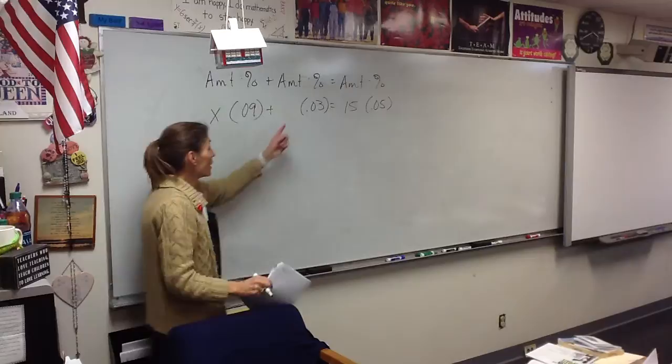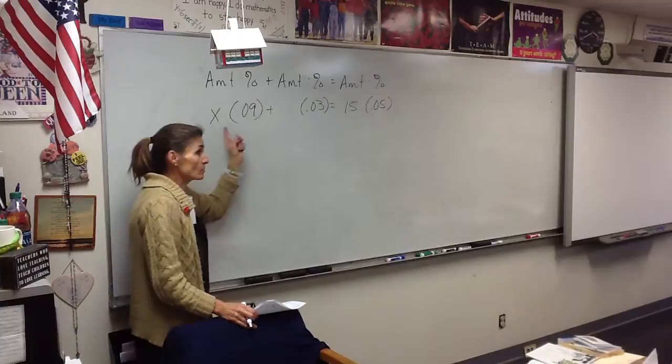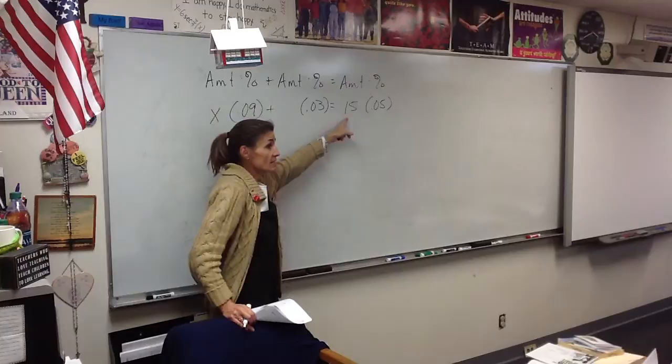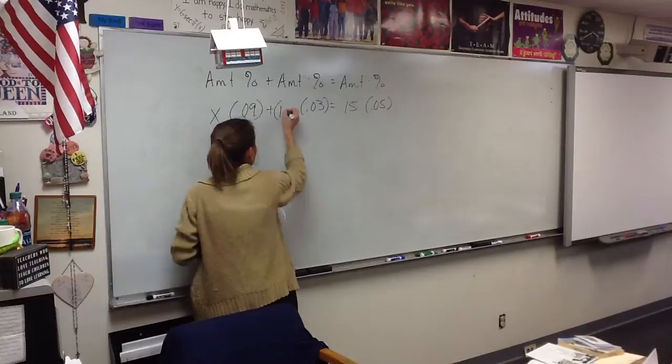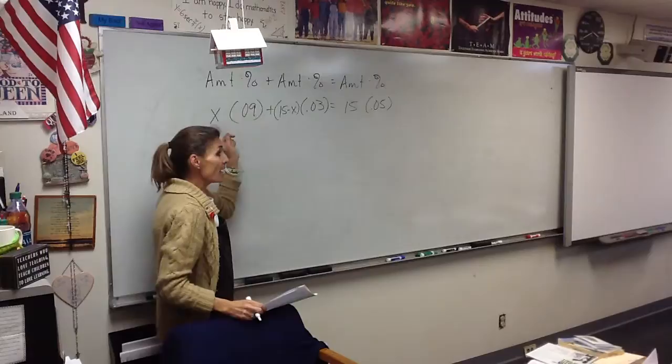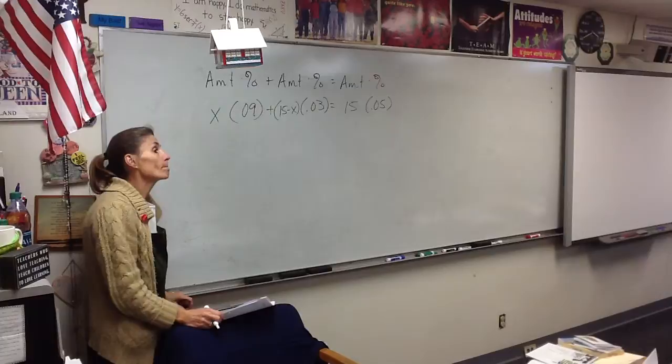Must be mixed with a 3% solution to get 15 gallons of a 5% solution. This one is tricky. I don't know how much of this I have either, do I? But what do I know about these two numbers? They have to add up to 15. So, if this one's X, won't this one be 15 minus X? Because they have to add up to 15.